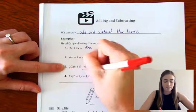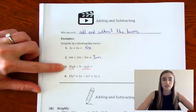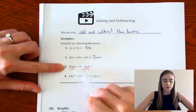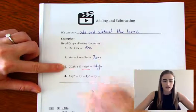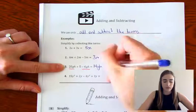But the 20gh and the minus 6gh are like terms. So we're going to go 20gh minus 6gh. It would give us 14gh. And then we've still got that plus 5 on the end as well.